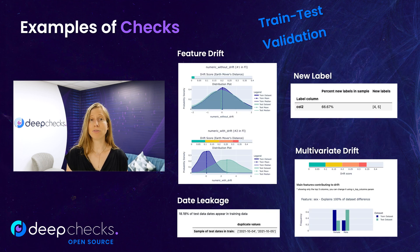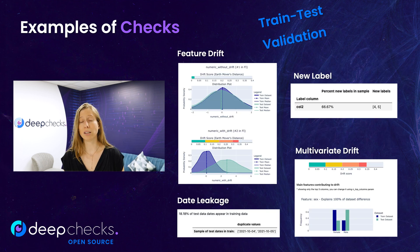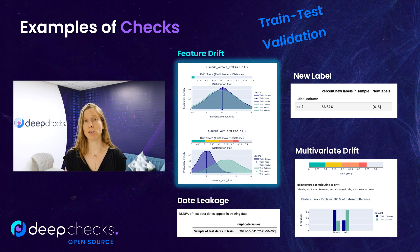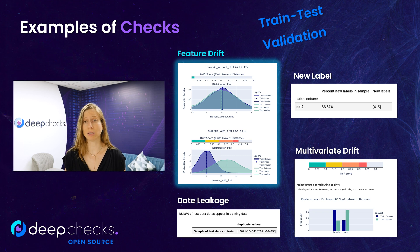Train-test validation checks compare two data batches, highlighting issues such as data drifts and leakages. One example is the train-test feature drift, which compares the distributions and calculates the drift for each of the features.